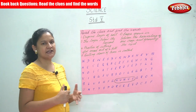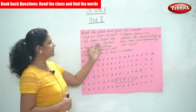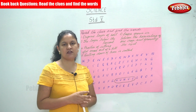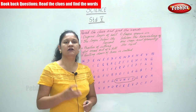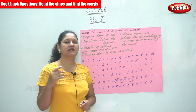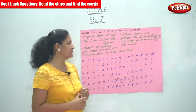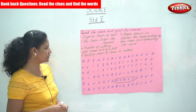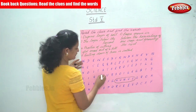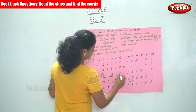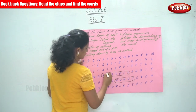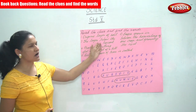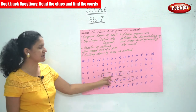Moving on to the second clue: the layer below the topsoil. The soil profile goes from the organic layer or humus layer, then the topsoil, the subsoil, and then the parent material or regolith. So the layer below the topsoil is the subsoil. S-U-B-S-O-I-L. We have found the subsoil.